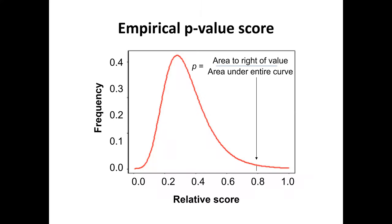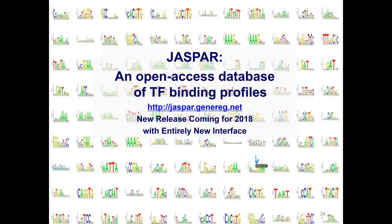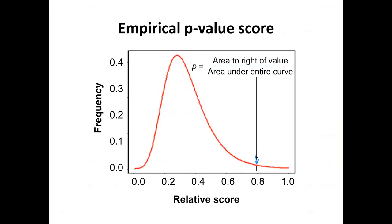You can compare the score against all matches found in the genome or other search space. By looking at all genome-wide matches to the motif and seeing how often you find a relative score that is better, you can convert that to an empirical p-value by taking the frequency under the curve to the right of your score.